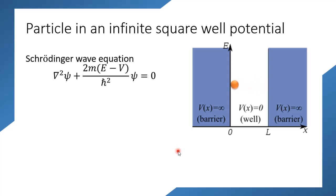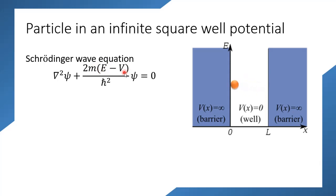To analyze how a microscopic body — maybe an electron or a proton — will behave in this quantum well, we need to analyze the Schrodinger wave equation. Here we are analyzing the Schrodinger's time-independent wave equation, given by: del-squared ψ plus (2m/ℏ²)(E − V)ψ = 0, where E is the energy of the particle, V is the potential, and del-squared is the Laplacian operator: ∂²/∂x² + ∂²/∂y² + ∂²/∂z².